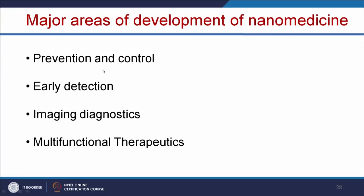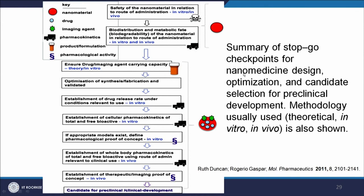The major areas of development of nanomedicine include prevention and control, early detection of disease, diagnostic applications, and multifunctional nanomaterials that can perform diagnostics and therapeutics simultaneously. Before taking nanomedicine to clinical application, we must cross several checkpoints: studying the safety of nanomaterials in vitro and in vivo, bio distribution, drug and imaging agent carrying capacity, drug release rate in vitro, effect on cells, effect on animal models, and human applications. Each drug takes at least 10 to 15 years to reach the market through all these steps.